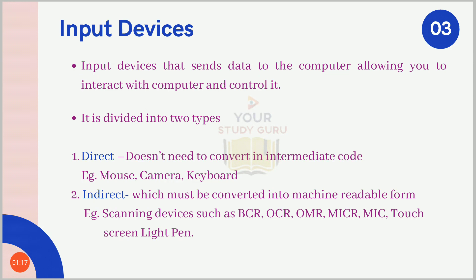Input devices are divided into two types. The first is direct input, which does not need to be converted into an intermediate code. Examples include mouse clicks, camera input — where you see the same photo on your mobile or computer — and key presses or sets of key presses.